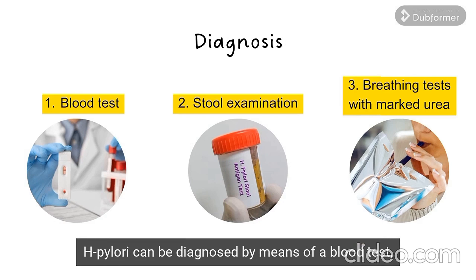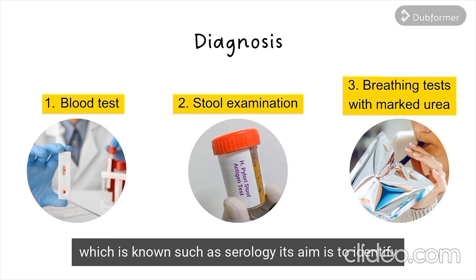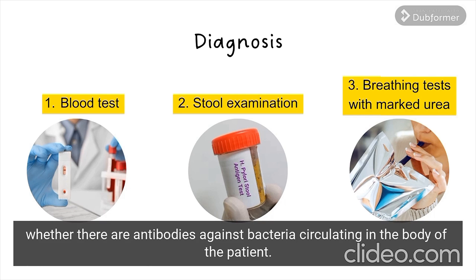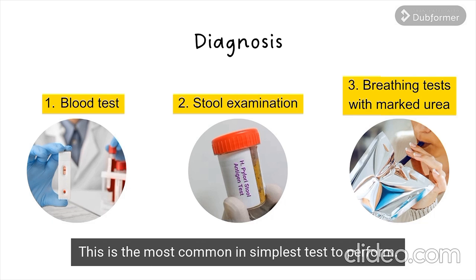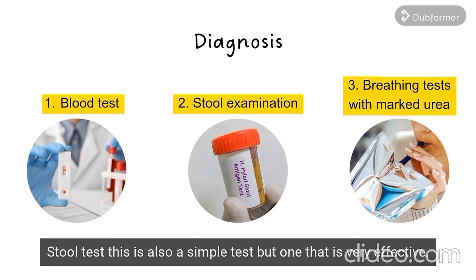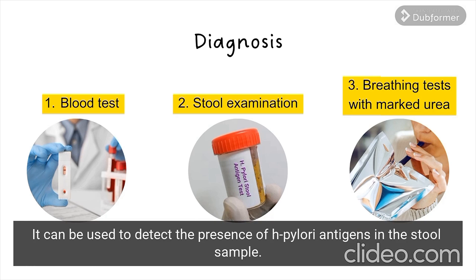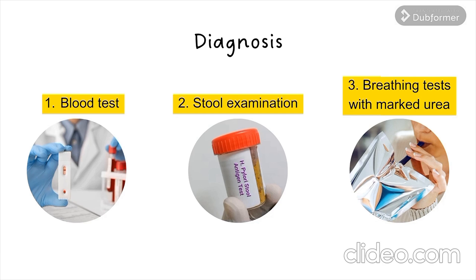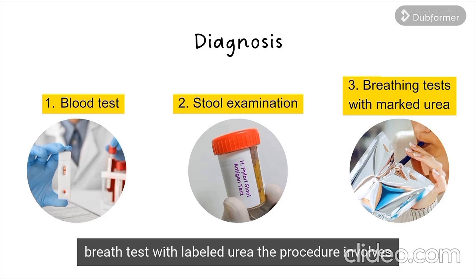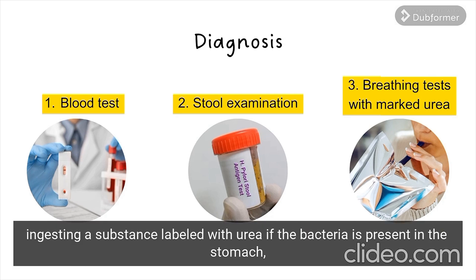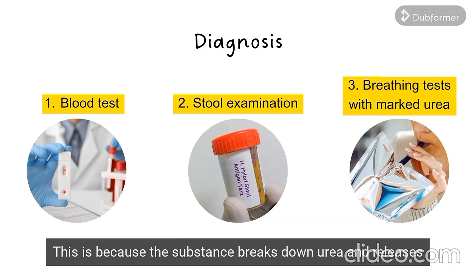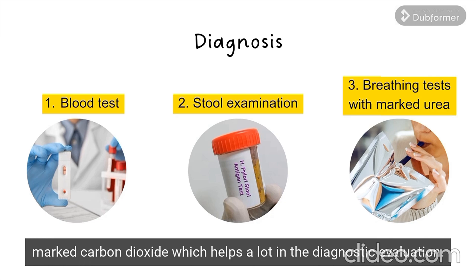Diagnosis. H. pylori can be diagnosed by means of a blood test known as serology, whose aim is to identify whether there are antibodies against the bacteria circulating in the body of the patient. This is the most common and simplest test to perform. A stool test is also simple but very effective, used to detect the presence of H. pylori antigens in a stool sample. Breath tests with labeled urea involve ingesting a substance labeled with urea; if the bacteria is present in the stomach, it can be detected because the substance breaks down urea and releases marked carbon dioxide, which helps in the diagnostic evaluation.